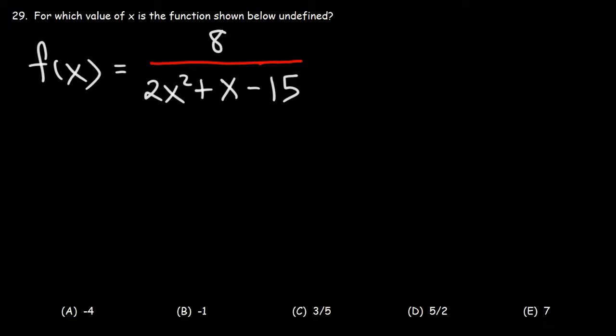Whenever you have a fraction or even a rational function, it's going to be undefined if the denominator is equal to 0. So therefore we can say that 2x squared plus x minus 15 cannot equal 0.